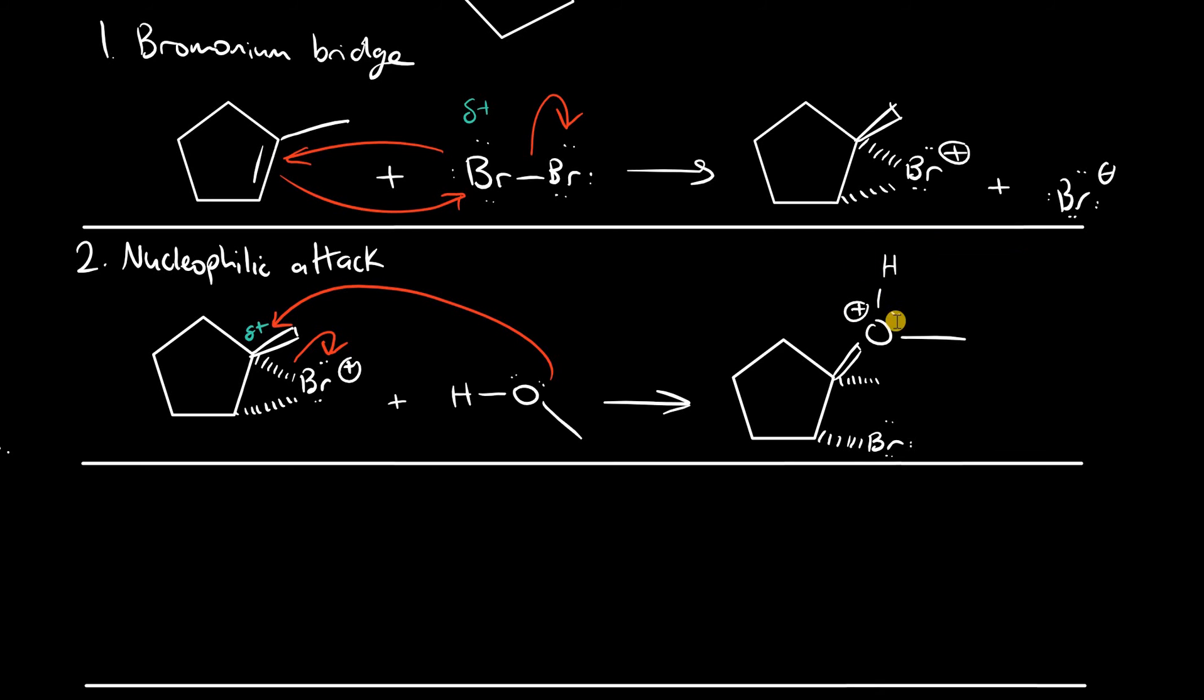Now this methoxy group is still protonated, so in step three we need to deprotonate it to stabilize this compound. If we look at the structure of methanol, it has two lone pairs and an accumulation of electron density on the oxygen, a partial negative charge. Lewis bases are electron pair donors, and therefore methanol is a weak nucleophile but also a weak base.